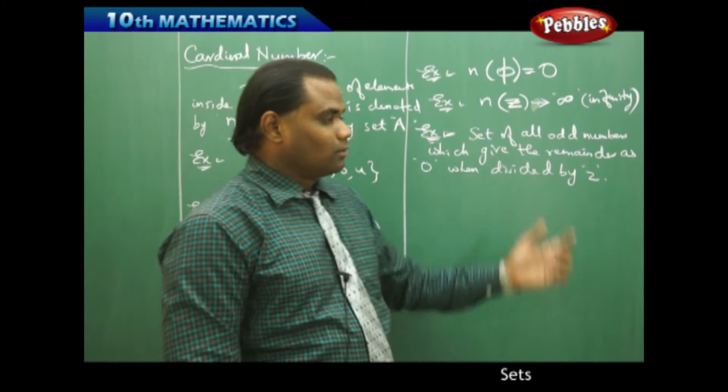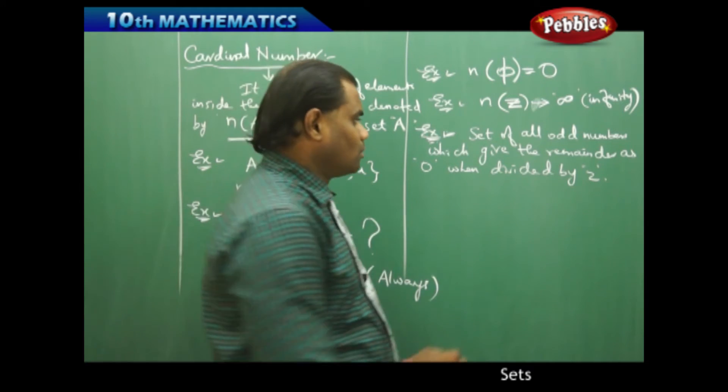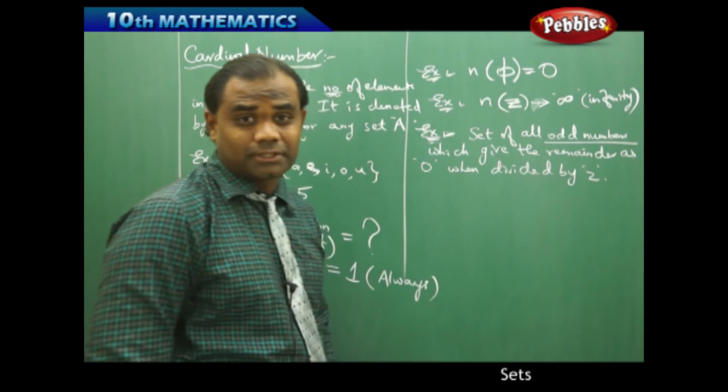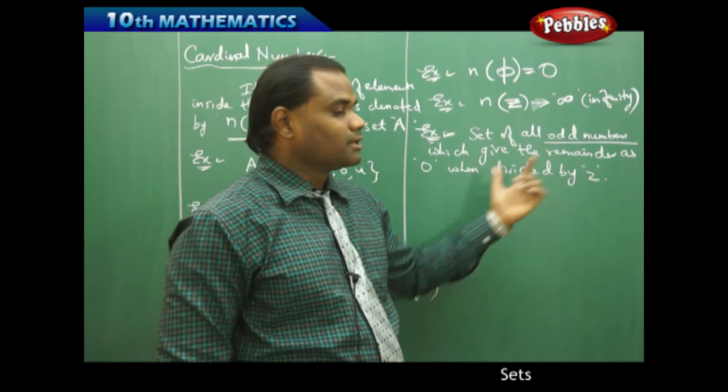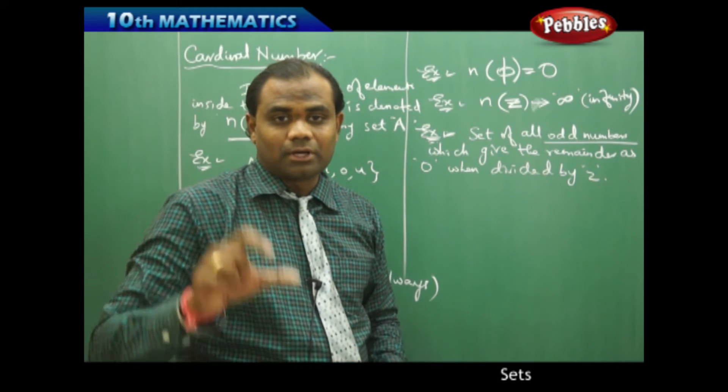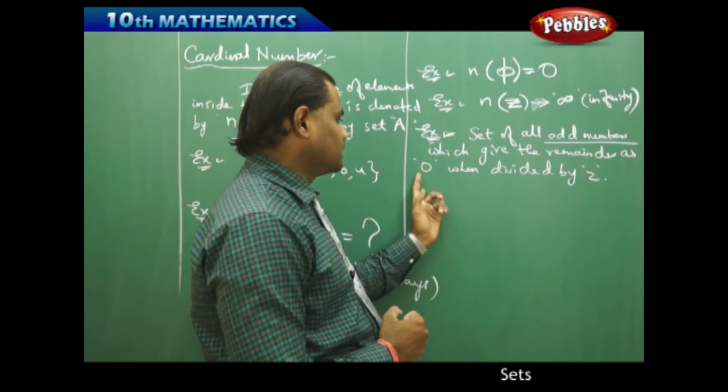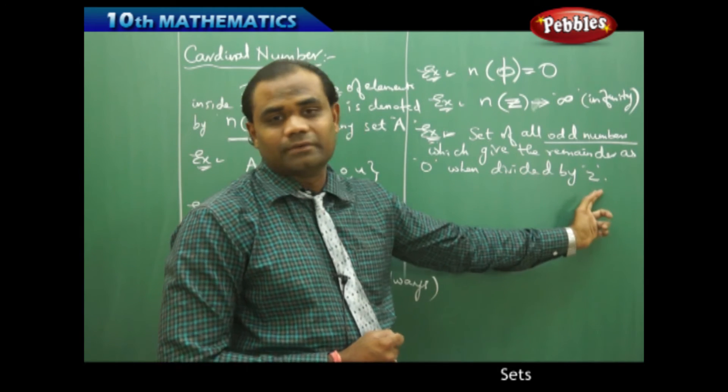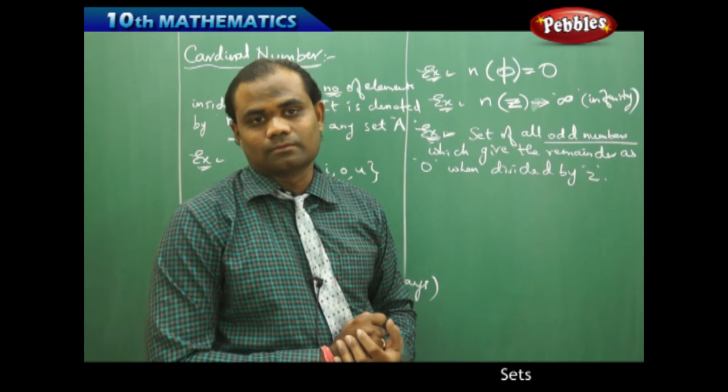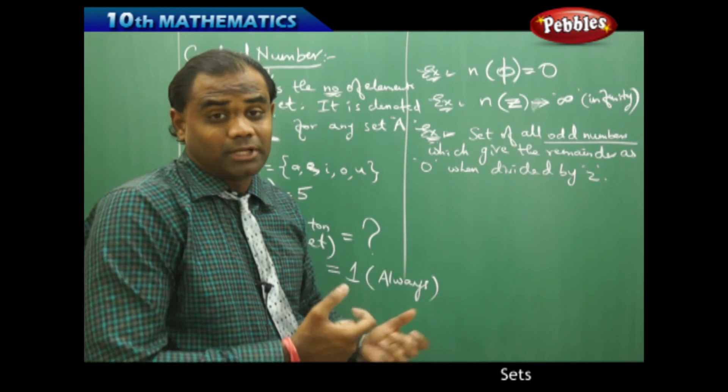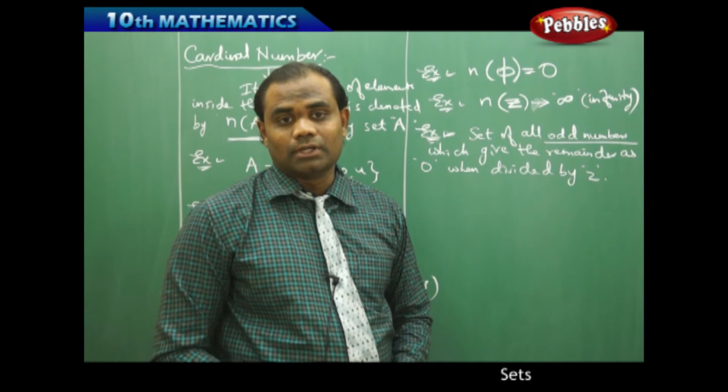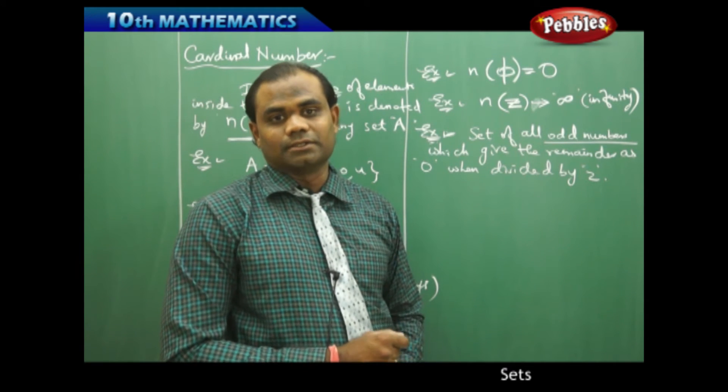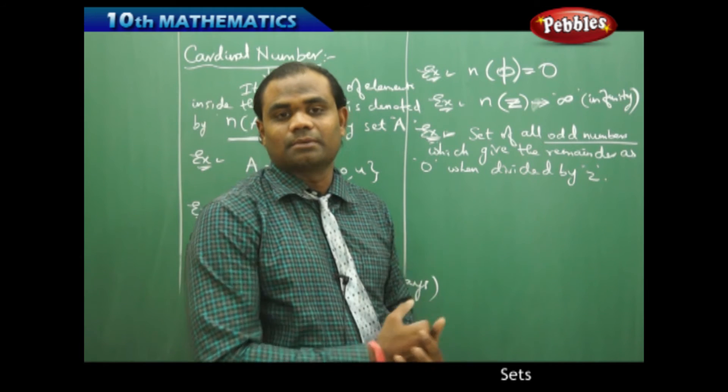Now, the set of all odd numbers - we all know what odd numbers are, but the condition here is that we need to pick only those odd numbers which make the remainder 0 when divided by 2. So how many numbers exist which give the remainder 0 when divided by 2 is the first identification we need to make in this example.